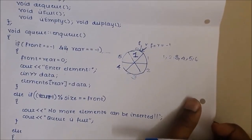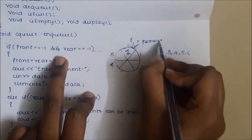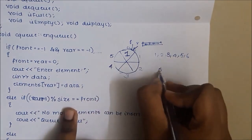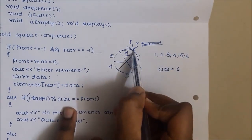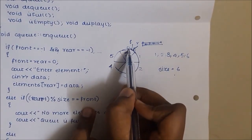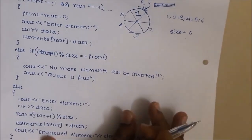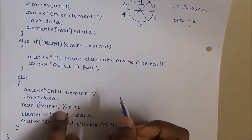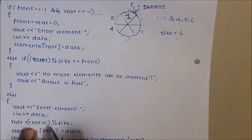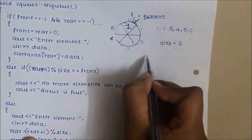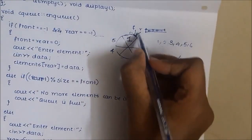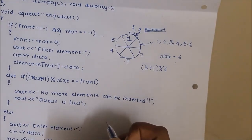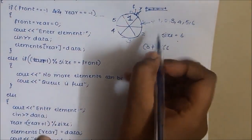When inserting the second element, we check if the queue is empty — front and rear are no longer minus 1, so it is not empty. Then we check if (rear + 1) % size == front. Rear is 0, so 0 + 1 % 6 is not equal to 0 (front), so the condition is not satisfied and we move to the else part. We accept element 2, then increment rear: (0 + 1) % 6 = 1, so rear now points to index 1, and 2 is inserted there.